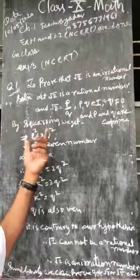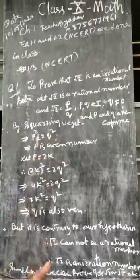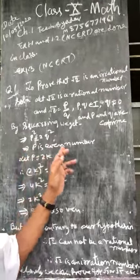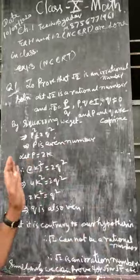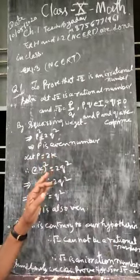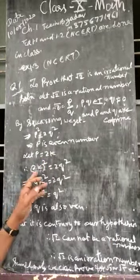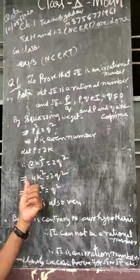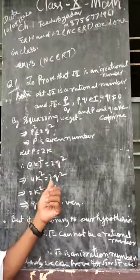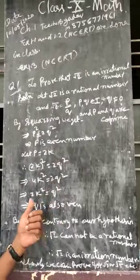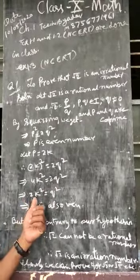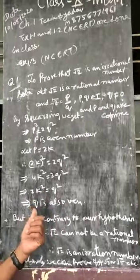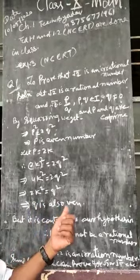By squaring we get p squared is equal to 2q squared, which implies p is an even number. So let p equal to 2k. Therefore, (2k)² equals 2q², which implies 4k² equals 2q², which implies 2k² equals q². This means q is also even.